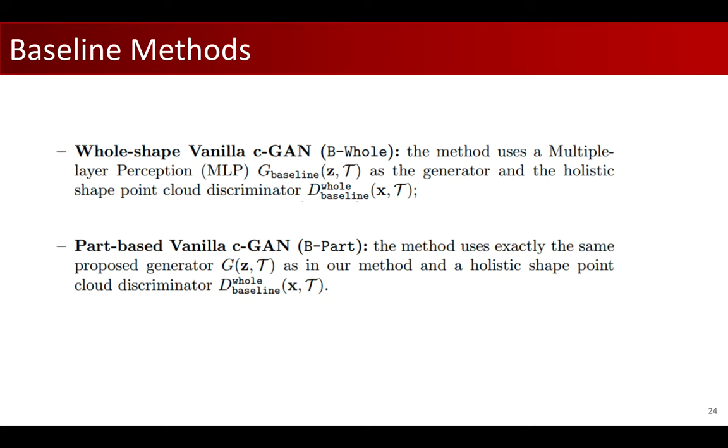For the B-part baseline, it uses exactly the same generator as our proposed method, but only uses the PointNet holistic shape discriminator. You can think of this baseline to be an ablated version of our method that removes the structure discriminator.